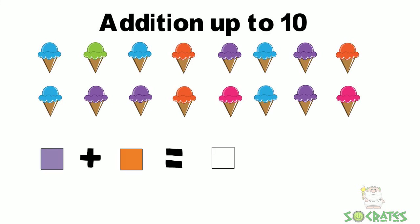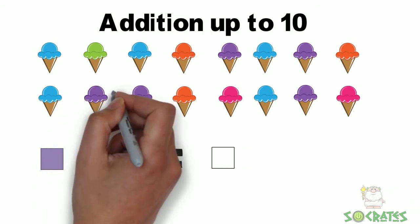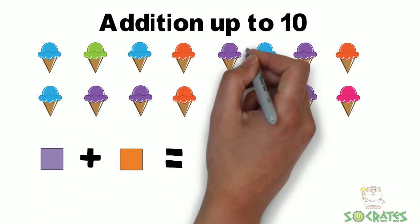So if we look at the purple ice cream cones, we have one, two, three, four, five.